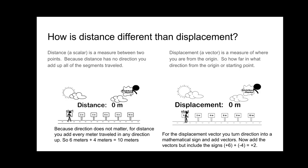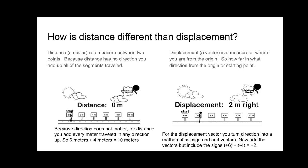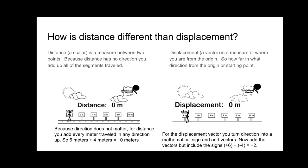Distance is basically a scalar quantity and is calculated from the start point to the end point — it has no direction. In the animation below, you can observe a particle starting from 0 meters, moving to 6 meters, and coming back to 2 meters. The total distance traveled is 10 meters: that is 6 meters forward plus 4 meters back in the left-hand direction, giving a total of 10 meters.